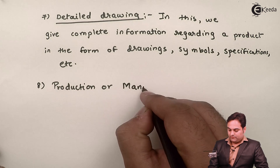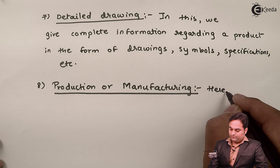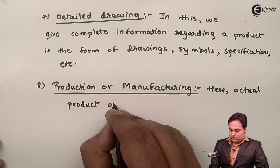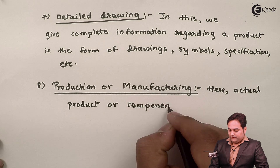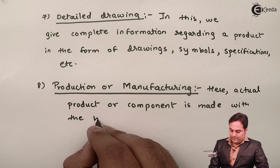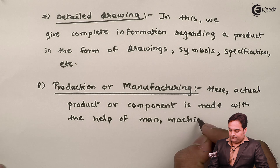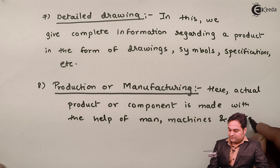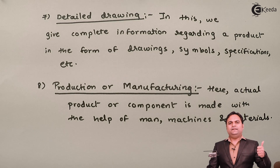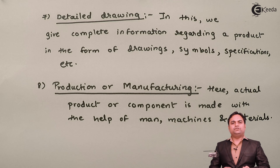The eighth and final step is production or manufacturing. In production or manufacturing, the actual product or component is made with the help of man, machines, and materials. These three — man, machine, and materials — come together and the process results in the actual production of the component.